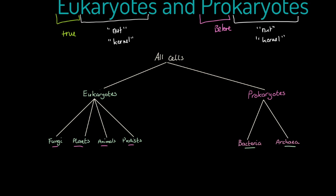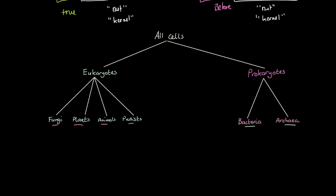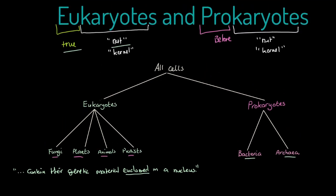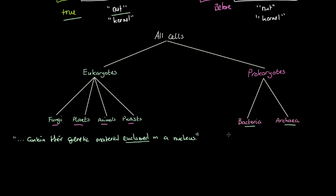For eukaryotic cells, we are talking about cells that contain their genetic material enclosed in a nucleus. Think about that enclosing — that is where we get our 'true nut' from. Whereas our bacterial cells and archaea have their genetic material — their DNA — not enclosed in a nucleus.